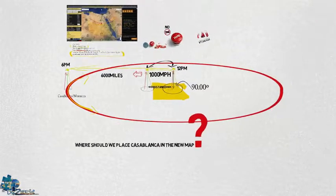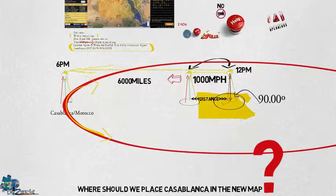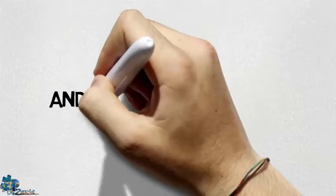So Casablanca can be anywhere on the left side of the circle. So to know where it is, we will have to do that from different positions. And this is how we're gonna know how far the continents are.